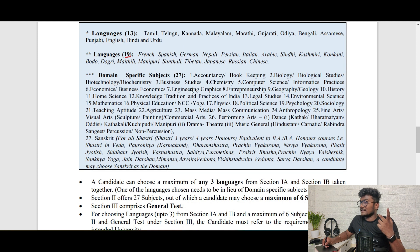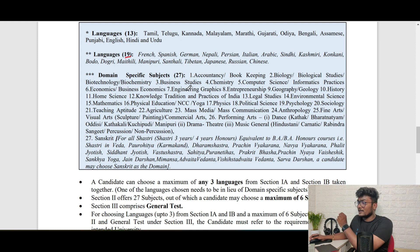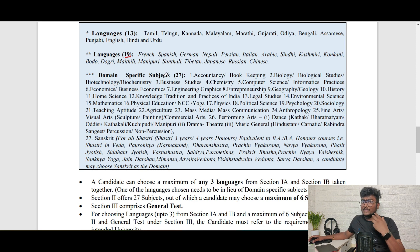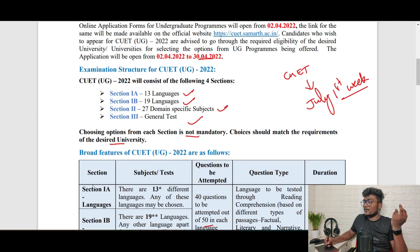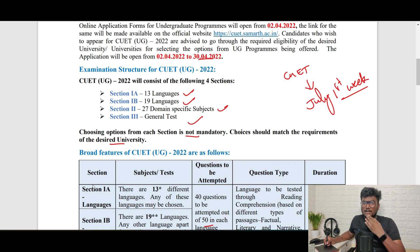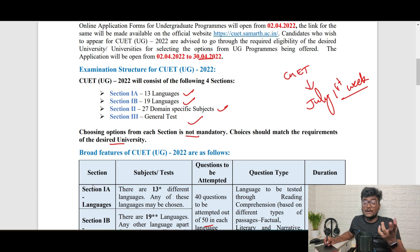In Section 1B, there are 19 languages including French, Spanish, German, Japanese, Russian, Chinese, Nepali, Persian, Italian, and others. As Delhi University also requires Japanese, for example, you would select it from these 19 languages. If that university requires any of these languages for eligibility, you need to choose it. If they don't require it, you don't need to choose — choosing options from each section is not mandatory. You only write whatever that university requires.